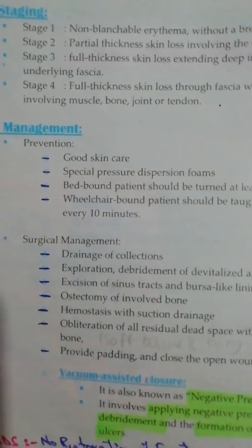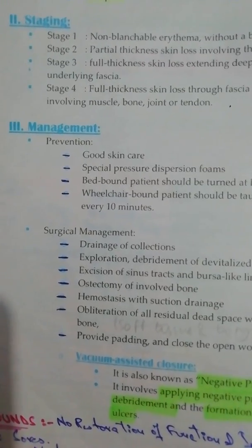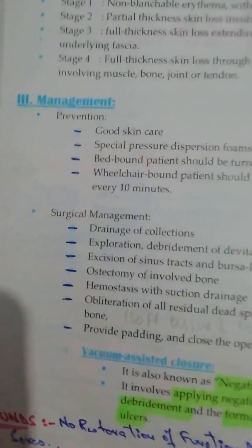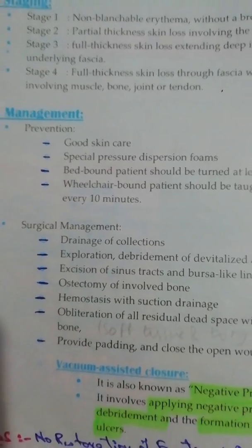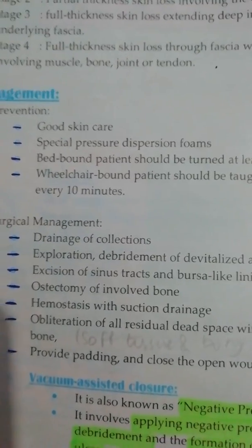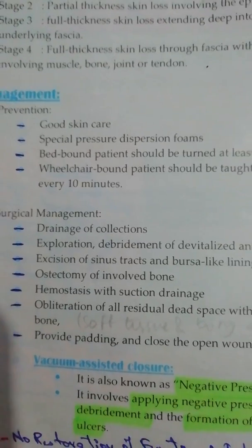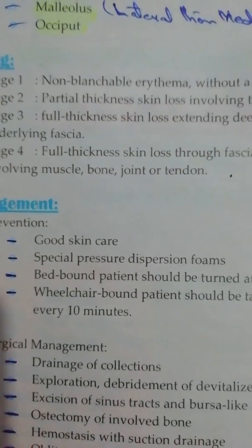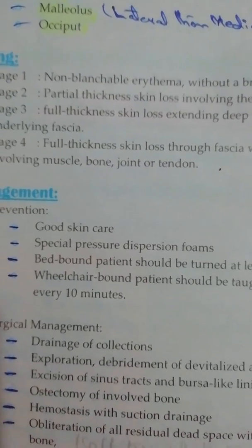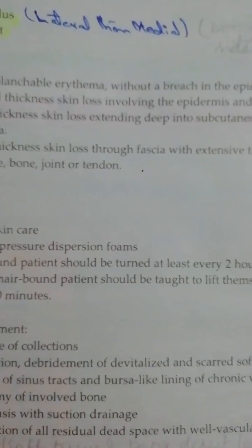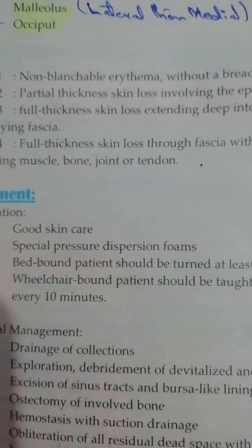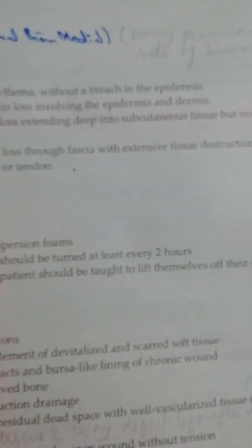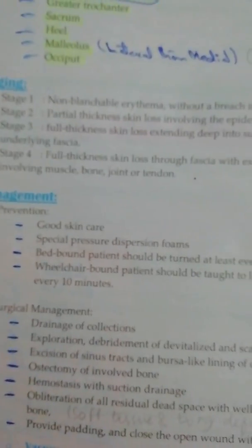Let's discuss the management of pressure sores. Preventively, if there is no ulcer yet, the area should be regularly moved, smoothed, and moisturized to prevent skin damage. A special type of mattress called pressure dispersion foam should be used. Patients on bed rest should change their position at least every 2 hours. Wheelchair-bound patients should also be taught to lift themselves off their seat for 10 seconds every 10 minutes.